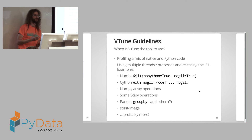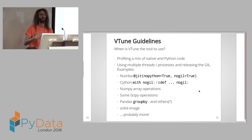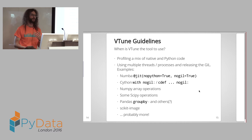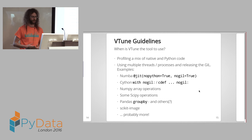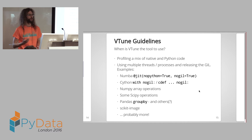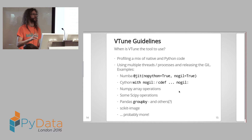VTune is the tool to use if you need to profile a mix of native and Python code, or if you're using multiple processes or threads and trying to do that by releasing the GIL. A lot of libraries used in data science have functions that release the GIL, and if you're writing your own code using Numba or Cython, you can also release the GIL yourself using no-GIL. I'm happy to talk about VTune more — just come and have a chat.